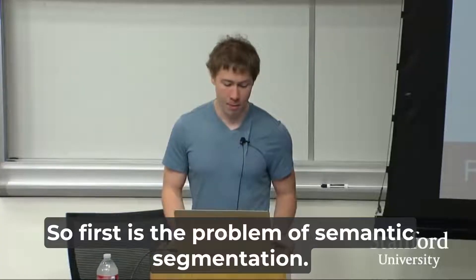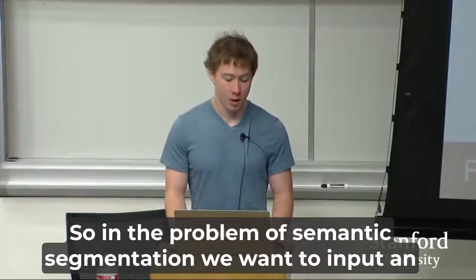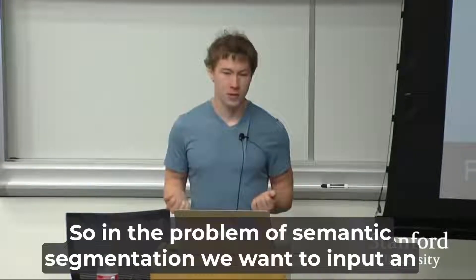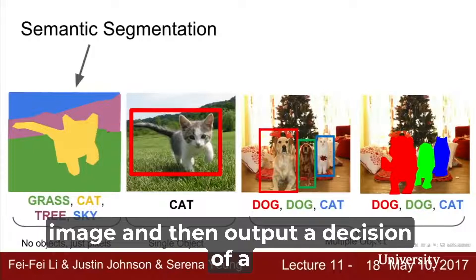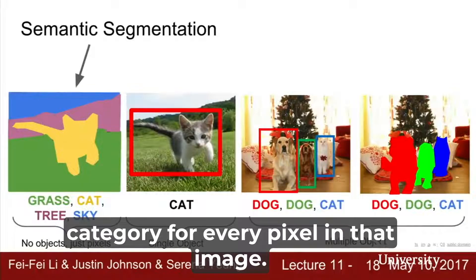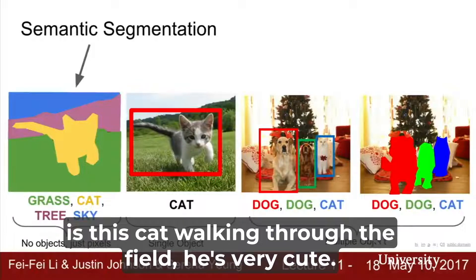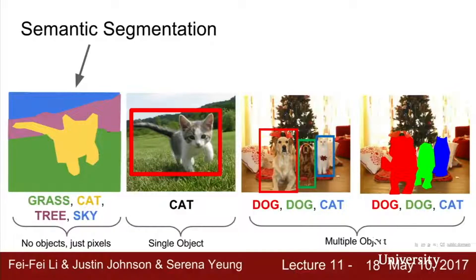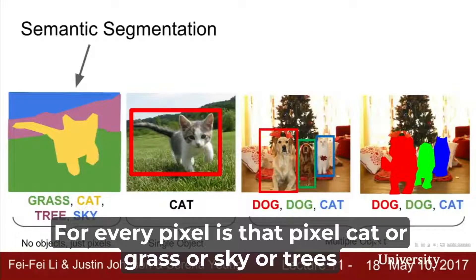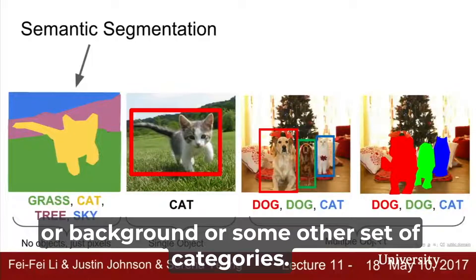First is the problem of semantic segmentation. In the problem of semantic segmentation, we want to input an image and then output a decision of a category for every pixel in that image. For this input image, for example, this cat walking through the field, he's very cute, and in the output we want to say for every pixel is that pixel cat or grass or sky or trees or background or some other set of categories.